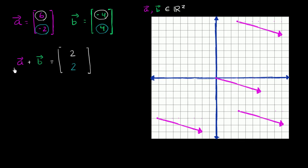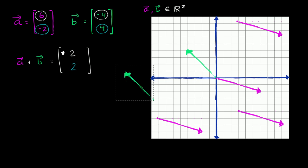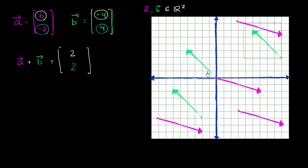Let's also draw vector b. Vector b in the horizontal direction goes negative four, and in the vertical direction it goes four. So if its tail is at the origin, its head would be at negative four, four. So that right over there is vector b. We could draw it in multiple positions — all those green vectors have the same magnitude and the same direction. What I really care about is its magnitude and its direction.